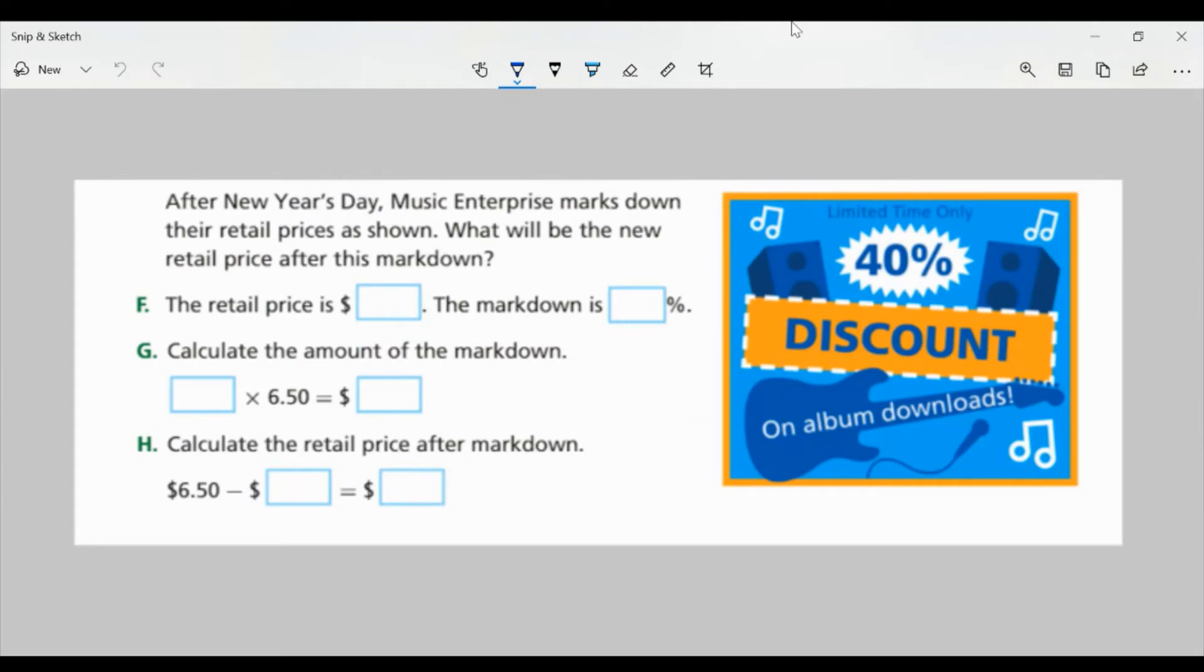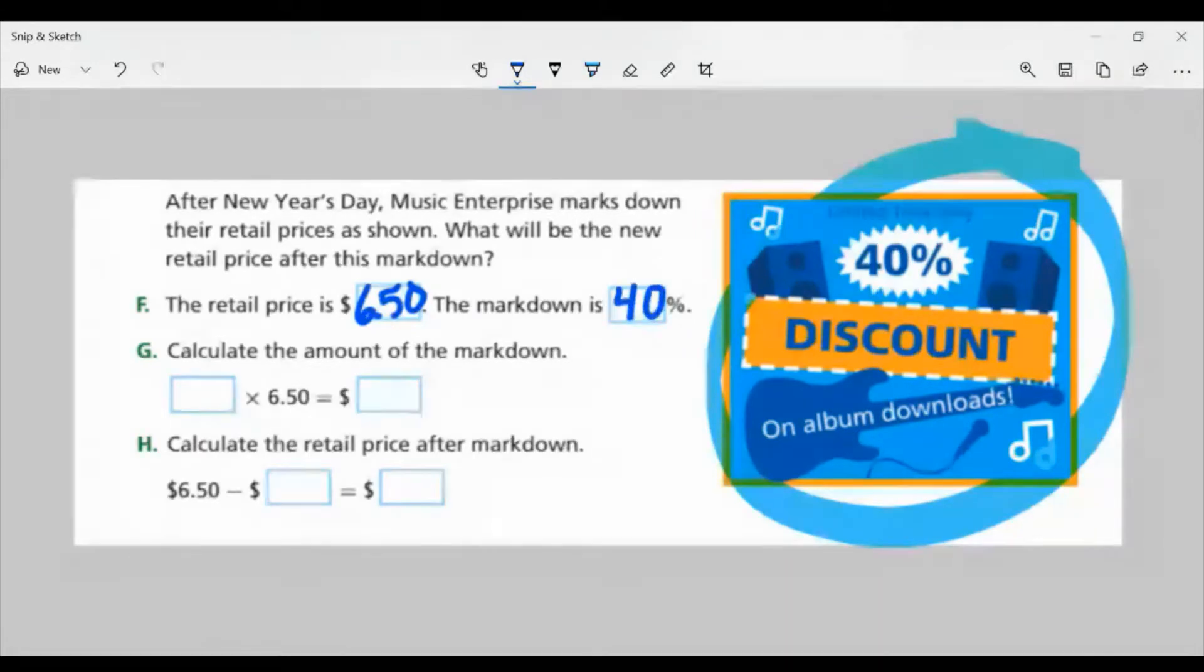So we're just continuing with task one here. After New Year's Day, Music Enterprise marks down their retail prices as shown. What will be the new retail price after this markdown? So I know I have a markdown of 40%. The retail price, we found that out, and that was $6.50.